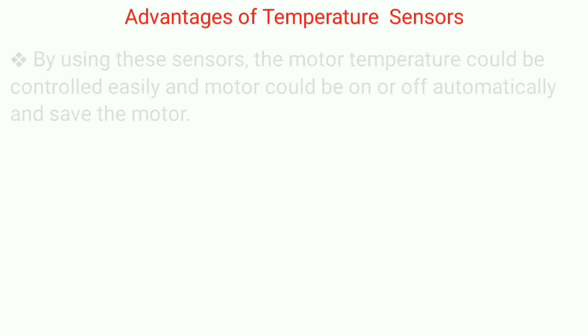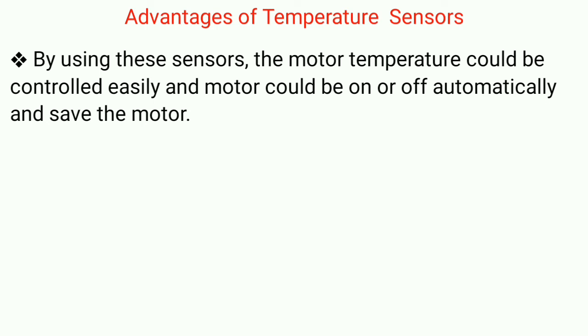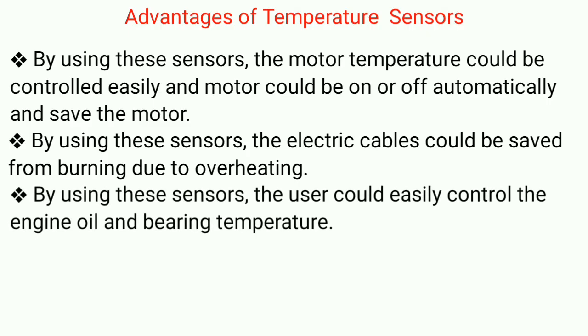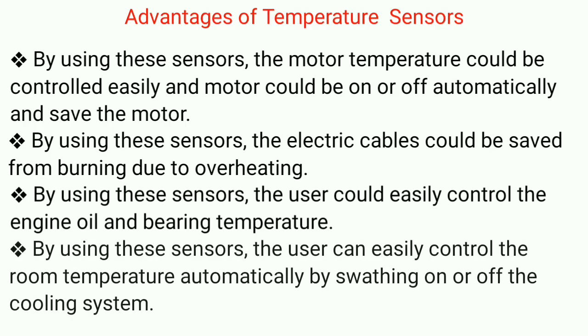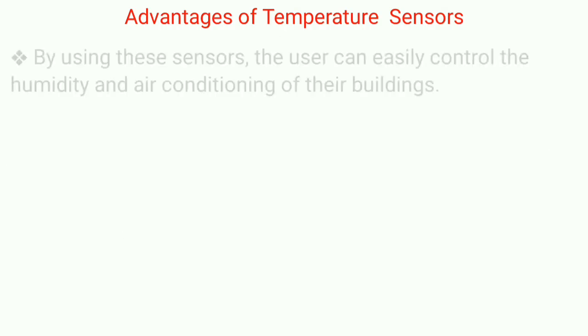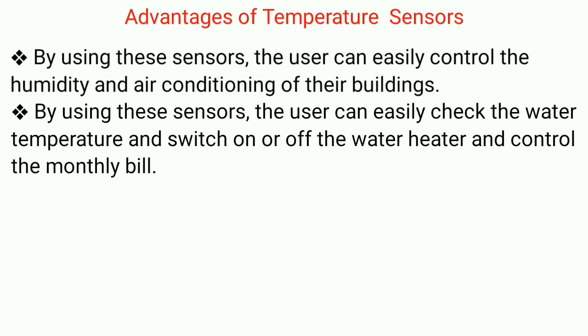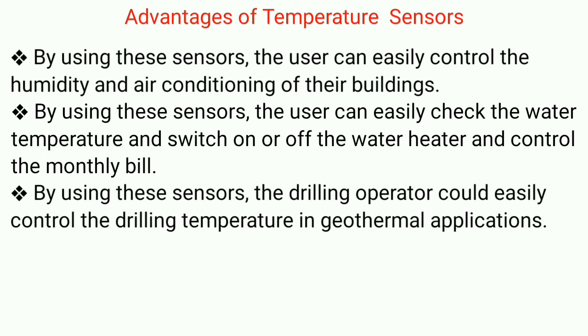Coming to the advantages of using temperature sensors. By using these, we can easily control the motor temperature. Electric cables could be saved from overheating using sensors. Sensors could easily control the engine oil and bearing temperature. We can also control the room temperature automatically. We can also control the humidity and air conditioning of buildings. We can also check water temperature and make it switch on and off the water heater to control our electricity bill. In geothermal applications, they could easily control the drilling temperature.